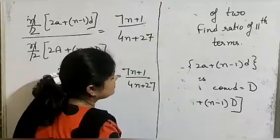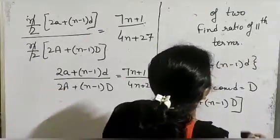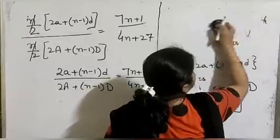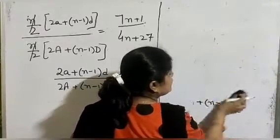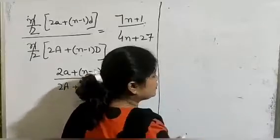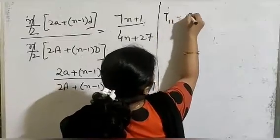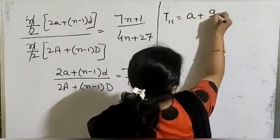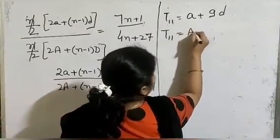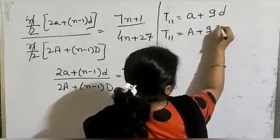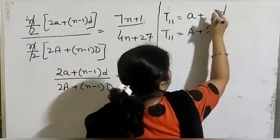From the question we have to find the ratio of the 11th terms of both series. The 11th term of the first series is a + 10d, and for the second series it is A + 10D.